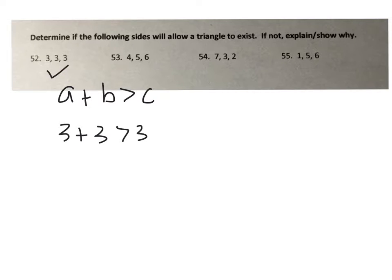On 53, with sides 4, 5, 6: 4 plus 5, the two smaller sides sure are bigger than 6. That's 9, so that's a triangle.